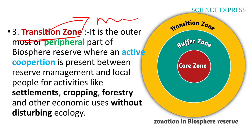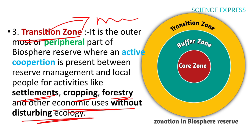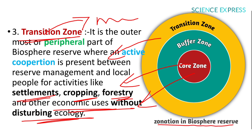The transition zone is the outermost or peripheral part of the biosphere reserve where active cooperation exists between reserve management and local people for activities like settlement, cropping, forestry, and other economic uses without disturbing the ecology. From the picture: the core zone has no human activities; the buffer zone permits limited activities; and the transition zone allows settlement, cropping, forestry, and economic uses.